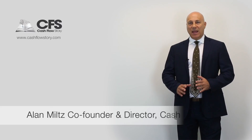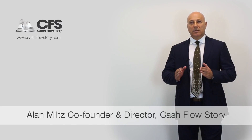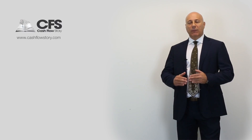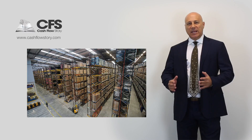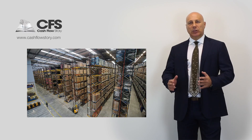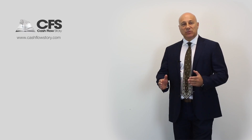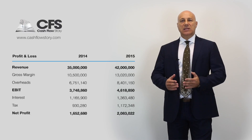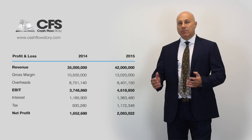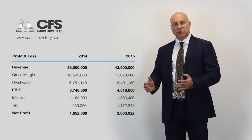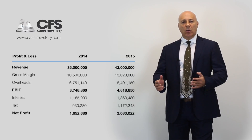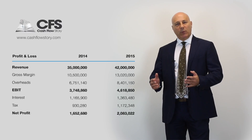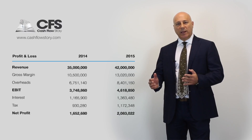Today's case study is based on a real company, Williams Plumbing. I met William a few months ago and William said business is absolutely brilliant. Williams revenue grew from 35 to 42 million, his gross margin grew from 10.5 to 13.2, and EBIT or earnings before interest and tax grew from 3.7 to 4.6 million.